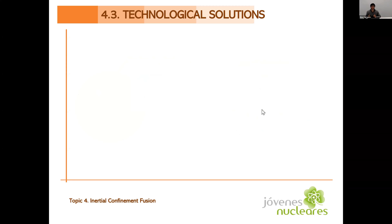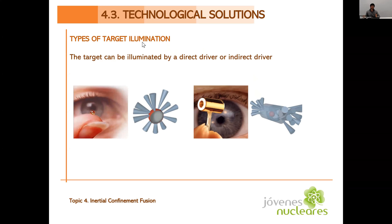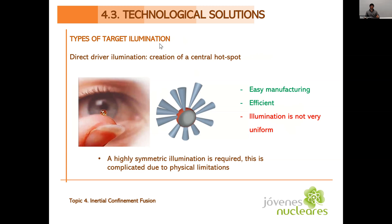Now, after seeing the whole process of inertial confinement fusion, we're going to go through the technological solutions. What are the technological solutions that we have found to put this into practice? First, we'll discuss types of targets, of target illumination. The target can be illuminated by a direct drive or an indirect drive. The direct driver illumination is the creation of a central hotspot. It is what we were discussing before. The laser shines directly on the capsule, compressing it and creating a hotspot in the center of the capsule. This has easy manufacture because we only have to create the capsule. It is fairly efficient because the laser shines directly on the capsule. And the problem with this is that illumination is not very uniform because the laser is very far away from the small capsule. So getting a uniform illumination is difficult. And sometimes we will end up with the capsule being compressed like a rugby ball shape and the hotspot not being central. So the burn of the capsule isn't very uniform.